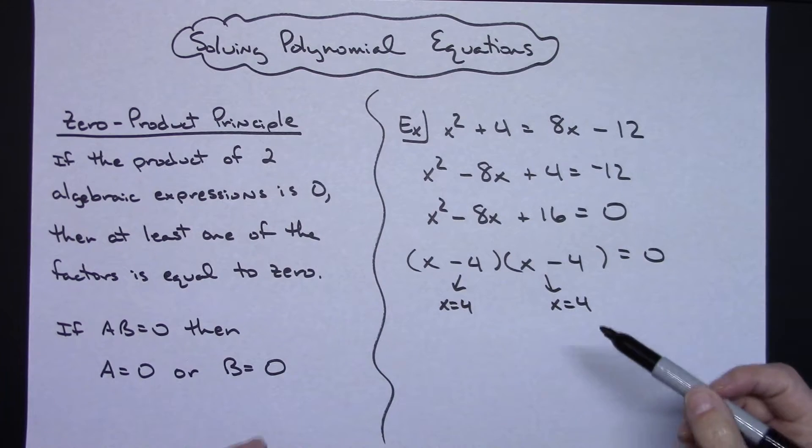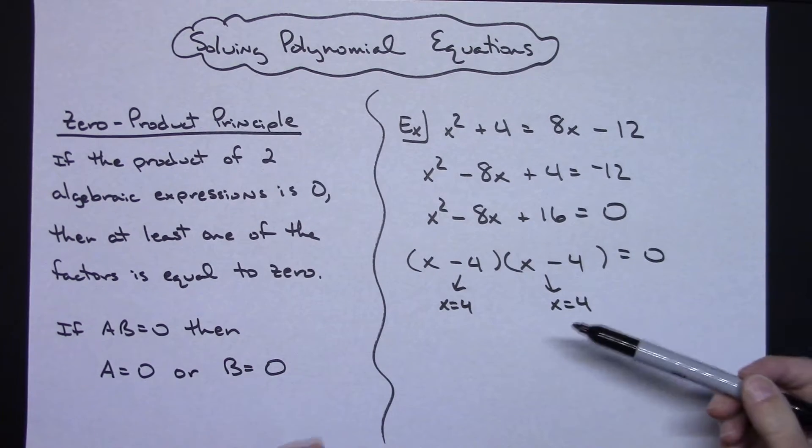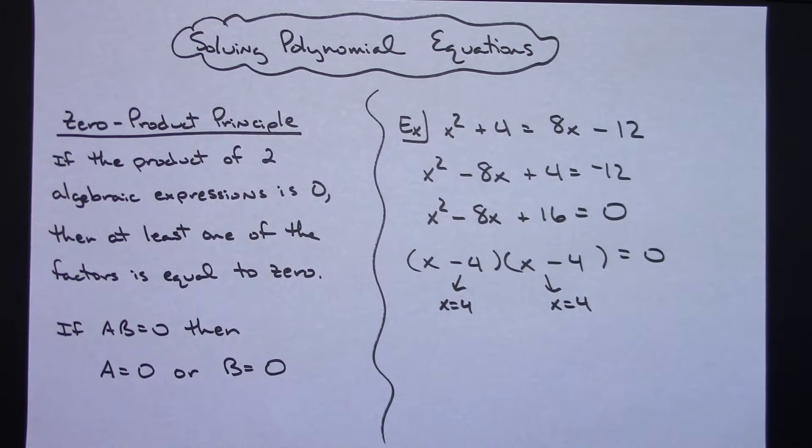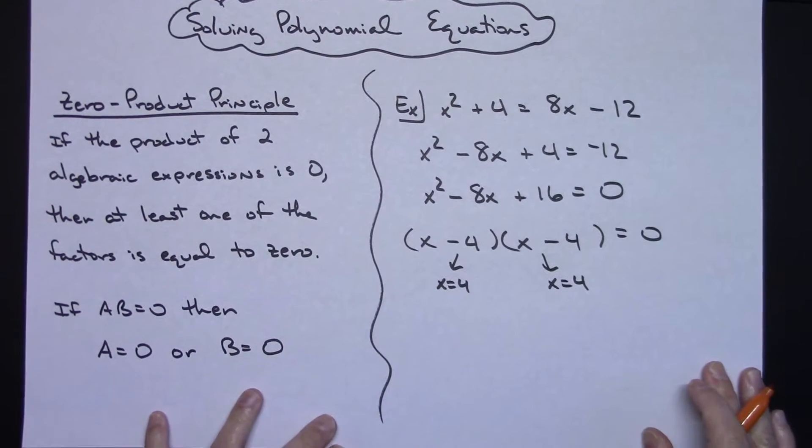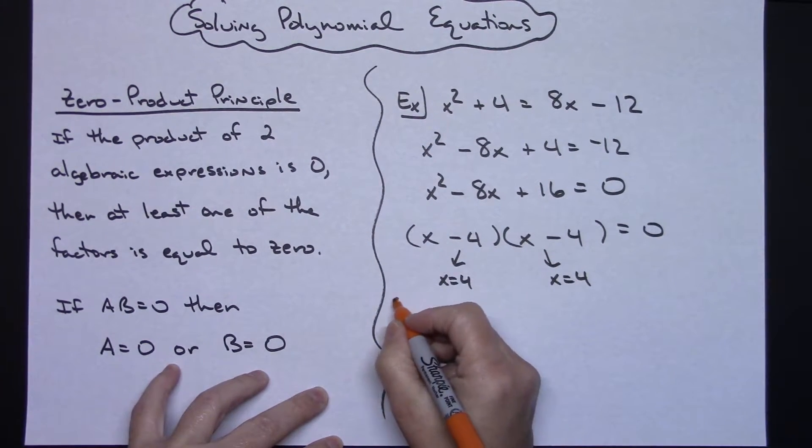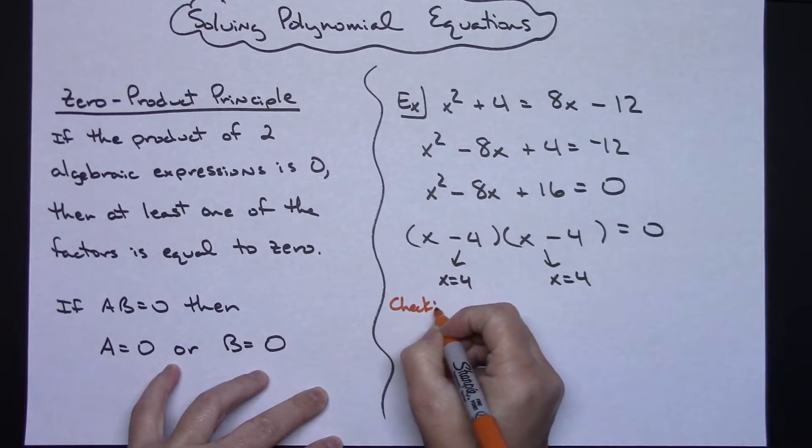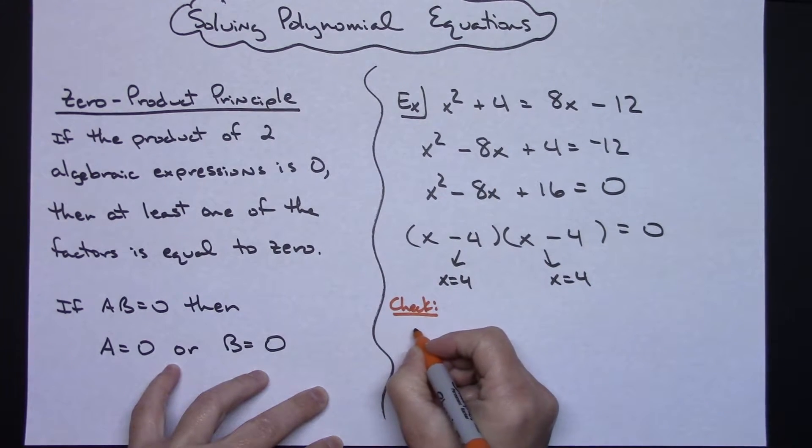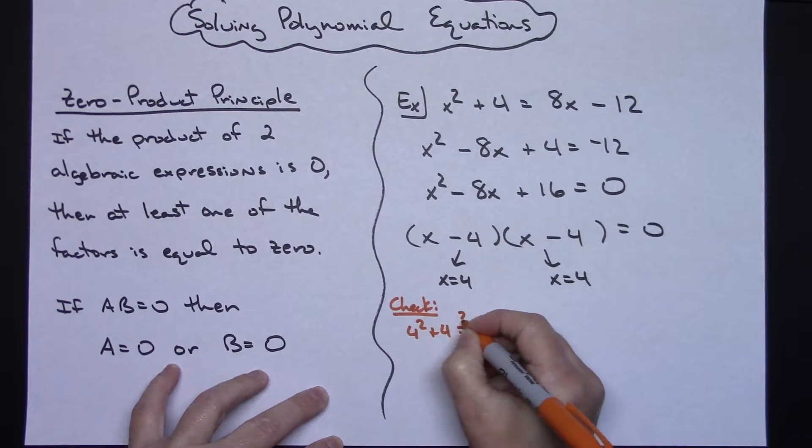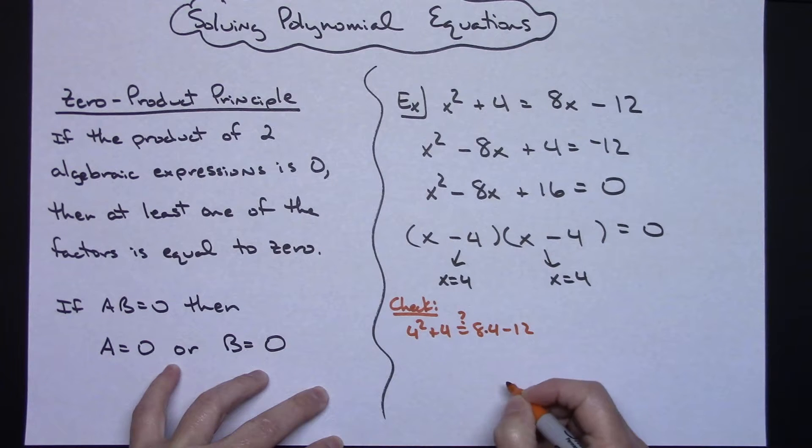Now every time that you solve one of these equations, you need to plug it back into the equation and check to see if it's true. I'll actually do that on this one, and then on the next two examples, I will leave that for you to do. If I'm saying x equals 4, then I need to check that in that equation. In other words, is 4 squared plus 4 equal to 5 times 4 minus 12?